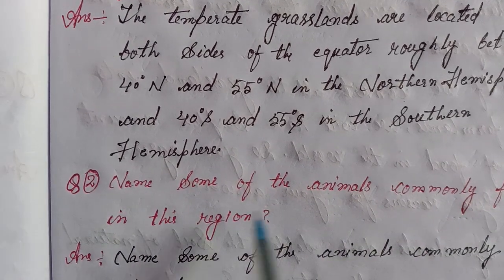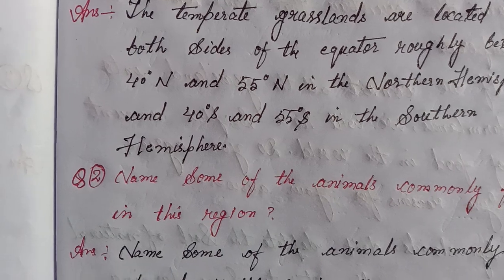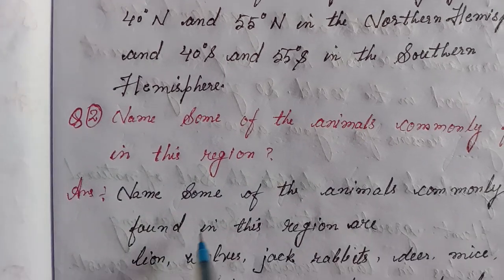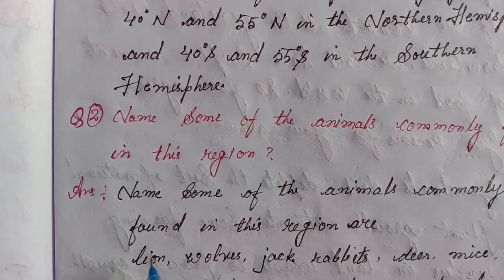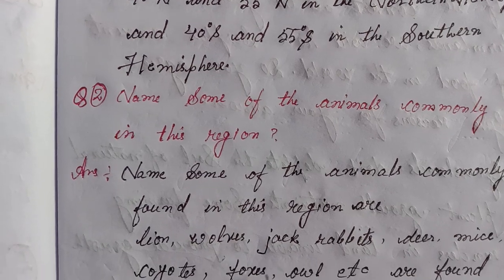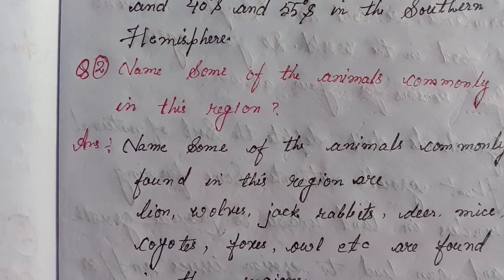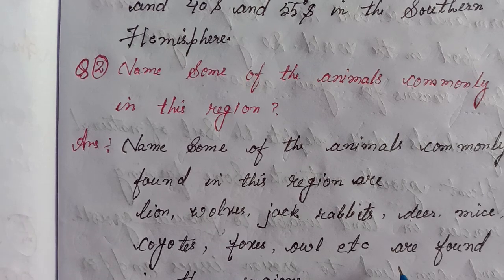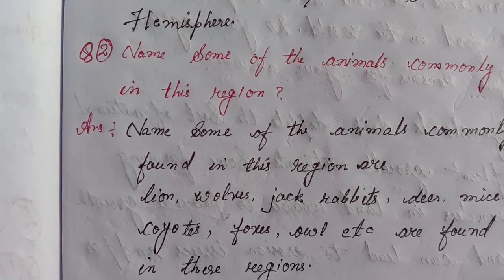Second, name some of the animals commonly found in this region. Answer: The animals commonly found in this region are lions, wolves, jack rabbits, deer, mice, prairie dogs, foxes, owls, etc.